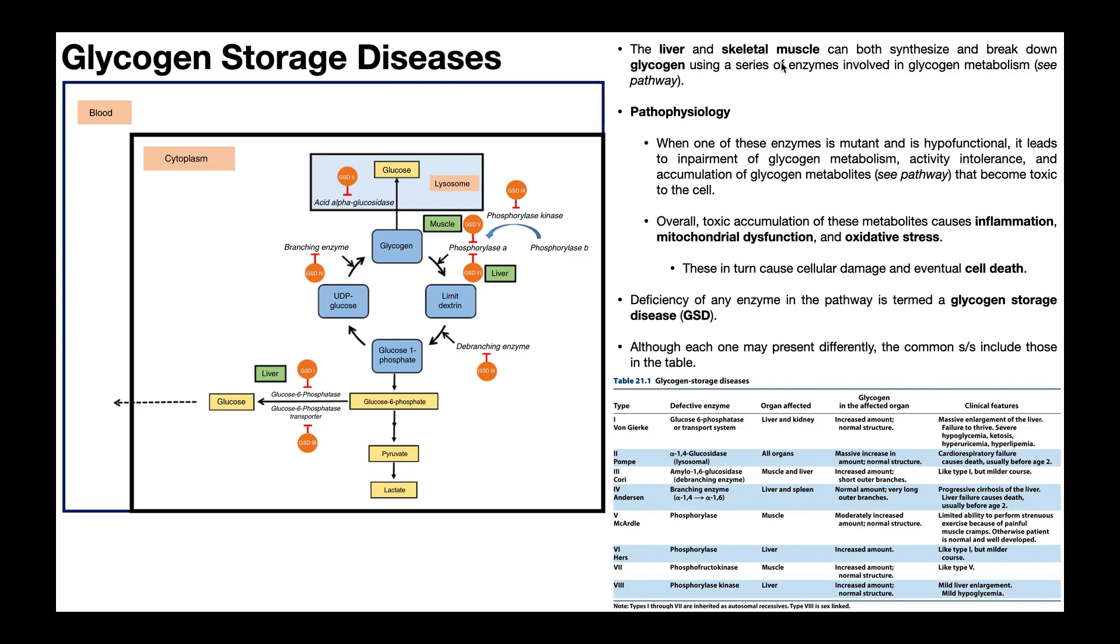In contrast, skeletal muscle cells are a lot more selfish. Remember that they are very metabolically active, and so they're going to be consuming the glucose from the glycogen that they make. When any one of these enzymes in this pathway is mutant, it is hypofunctional, it has a loss of function. That's usually what we mean when we say the enzyme is deficient.